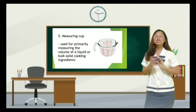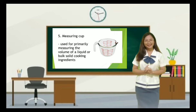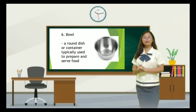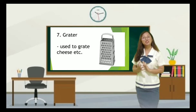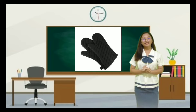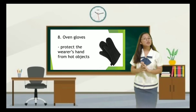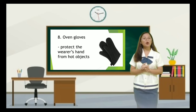Number six — Raya, a bowl is a round dish or container typically used to prepare and serve food. Number seven — Anna, it is a grater, used to grate cheese and soft foods. Number eight — these are oven gloves, insulated gloves worn in the kitchen to protect the wearer's hands from hot objects such as ovens, stoves, and cookware.